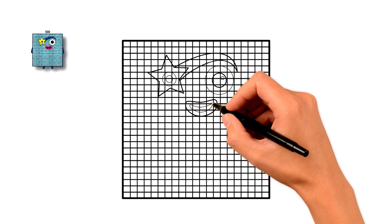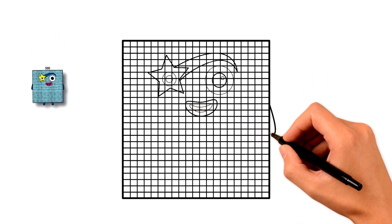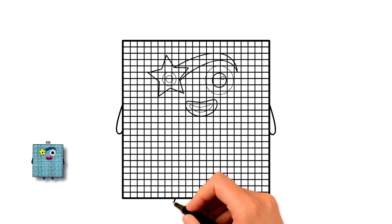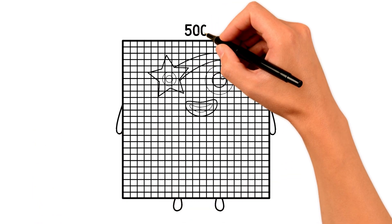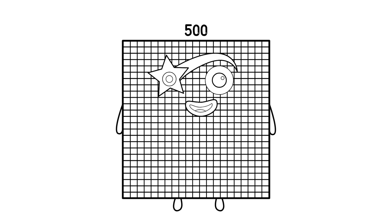Time for his hands! Draw one on each side. Now, his feet. Two small ones at the bottom. At the very top, write his badge. The number 500. Nice and bold.